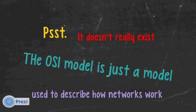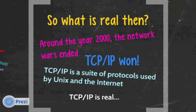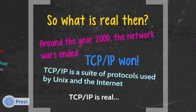So what's real then? Well, around the year 2000, the network wars ended and TCP/IP won. TCP/IP is a suite of protocols — a whole bunch of protocols. It's more than just TCP and IP. It's used by Unix and the Internet. TCP/IP is real.